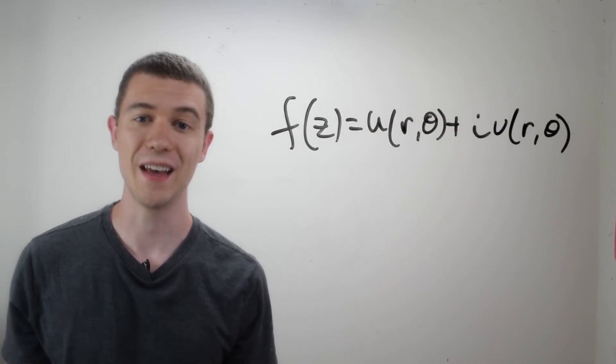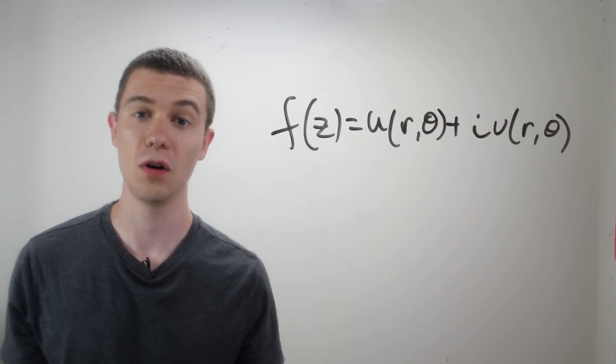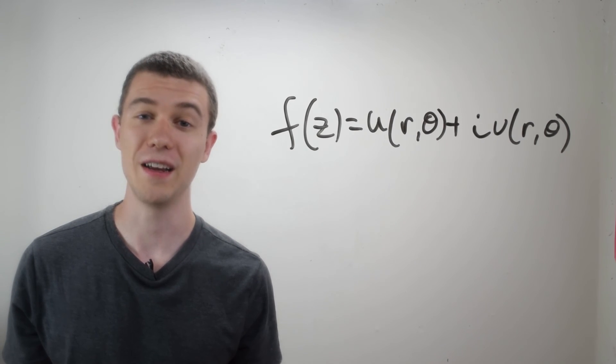I'll wrap this video up by saying that we can also represent the real and the imaginary parts of a function, u and v, by their polar form. If we let x be r cosine theta and y r sine theta, we can also write any complex function in its polar form this way.